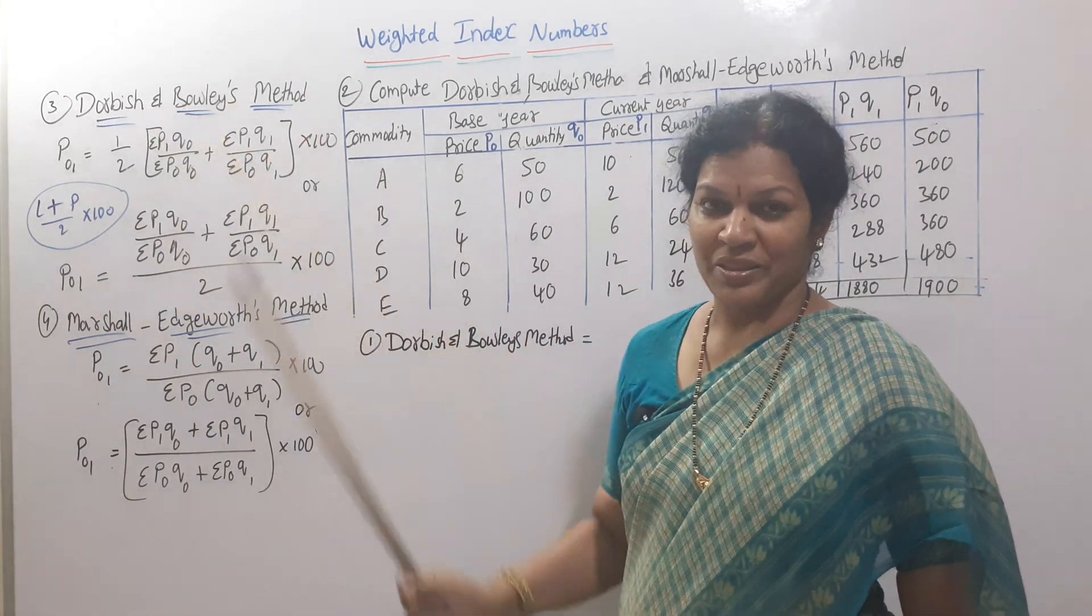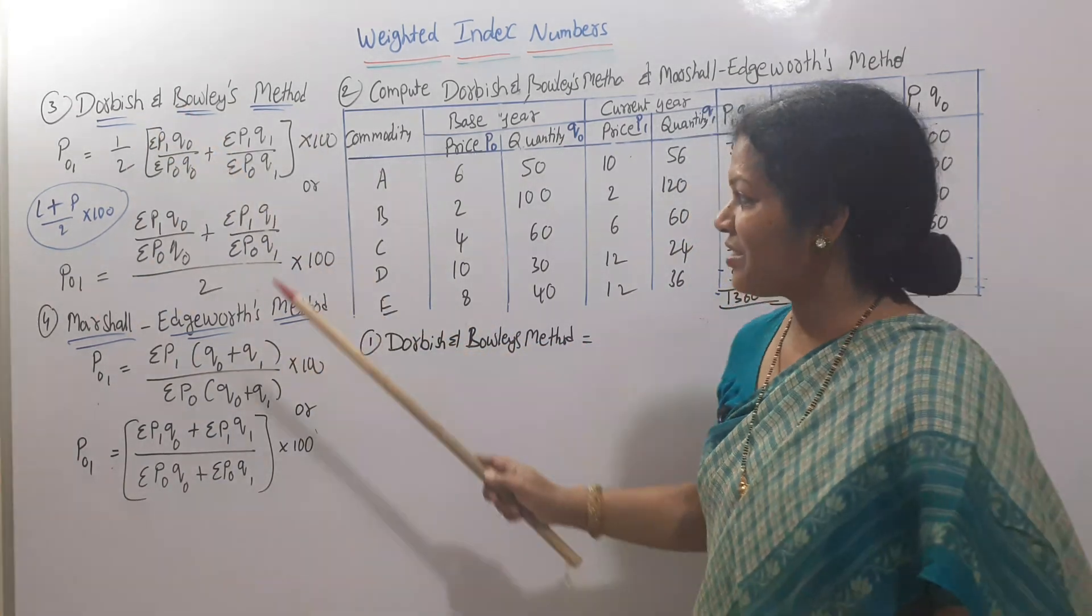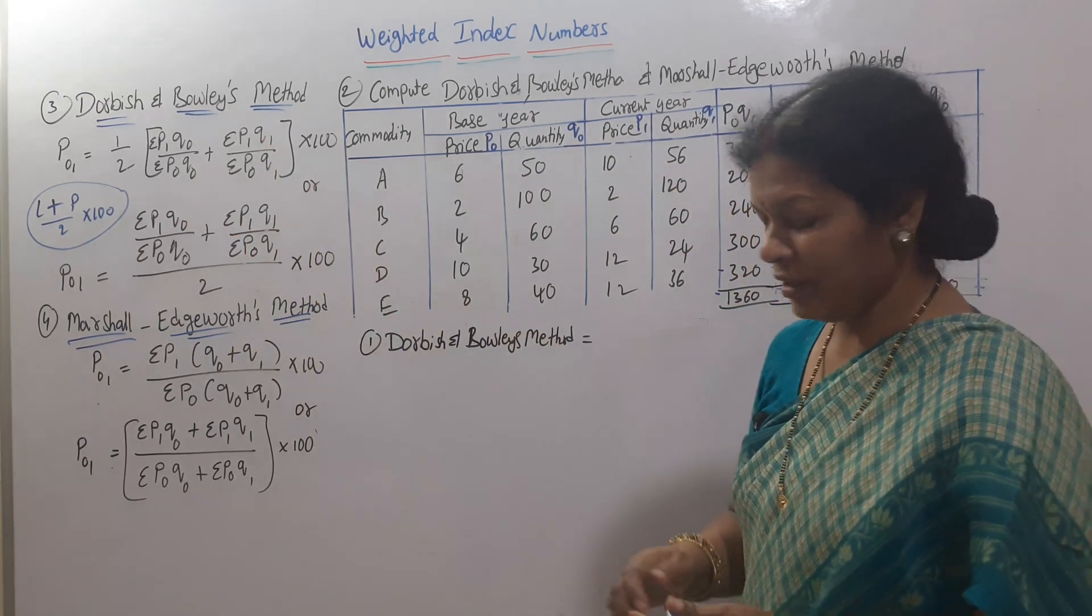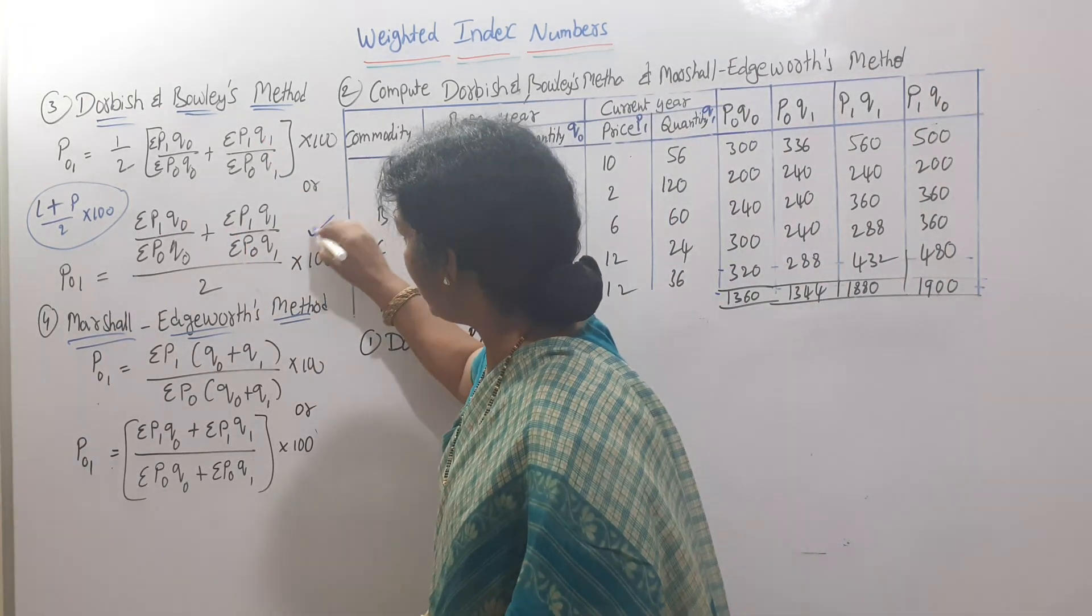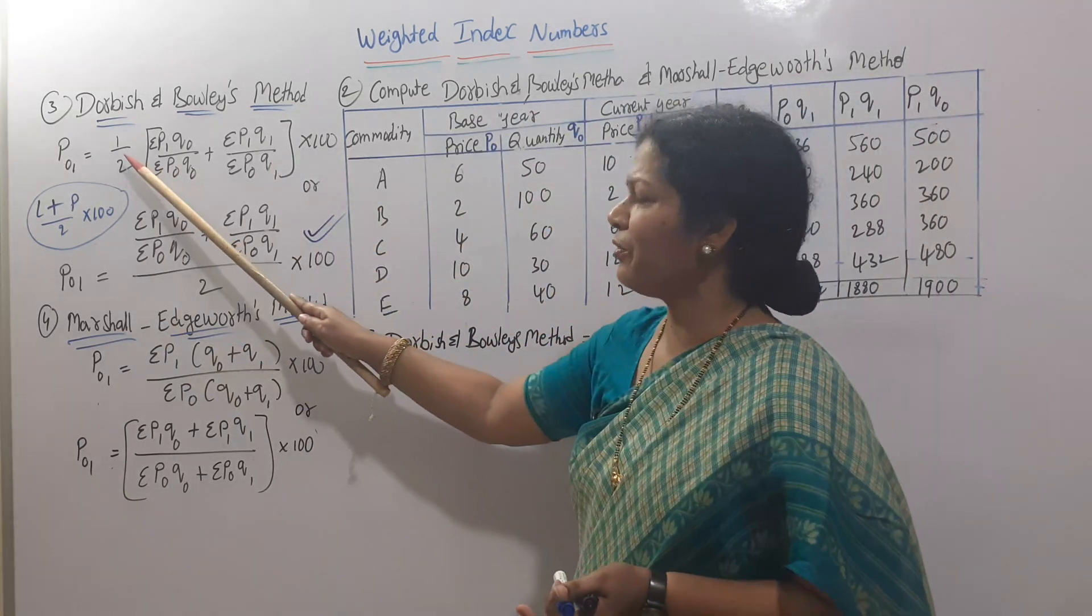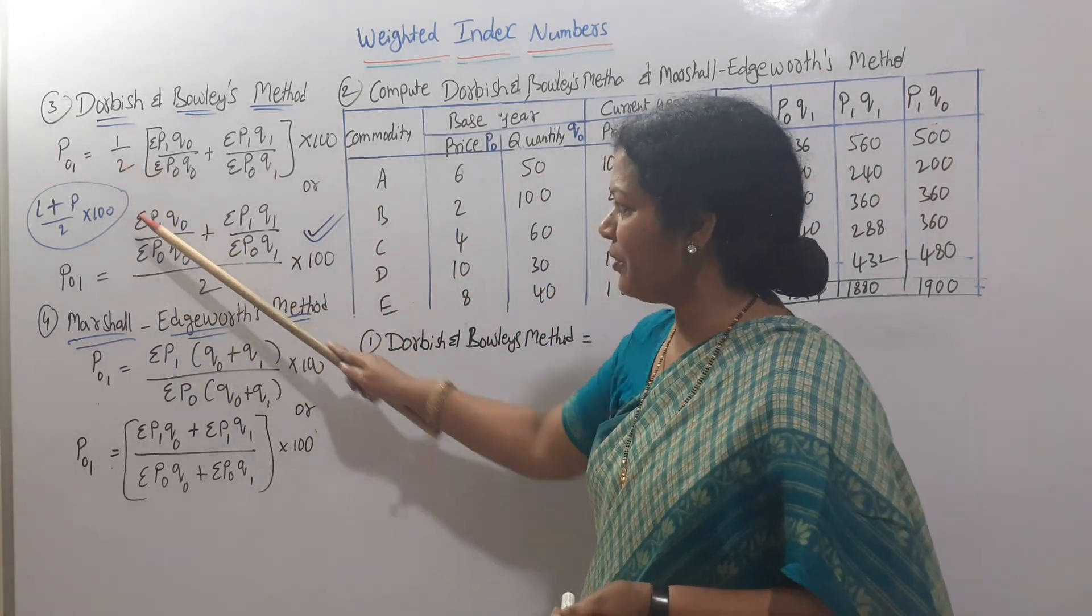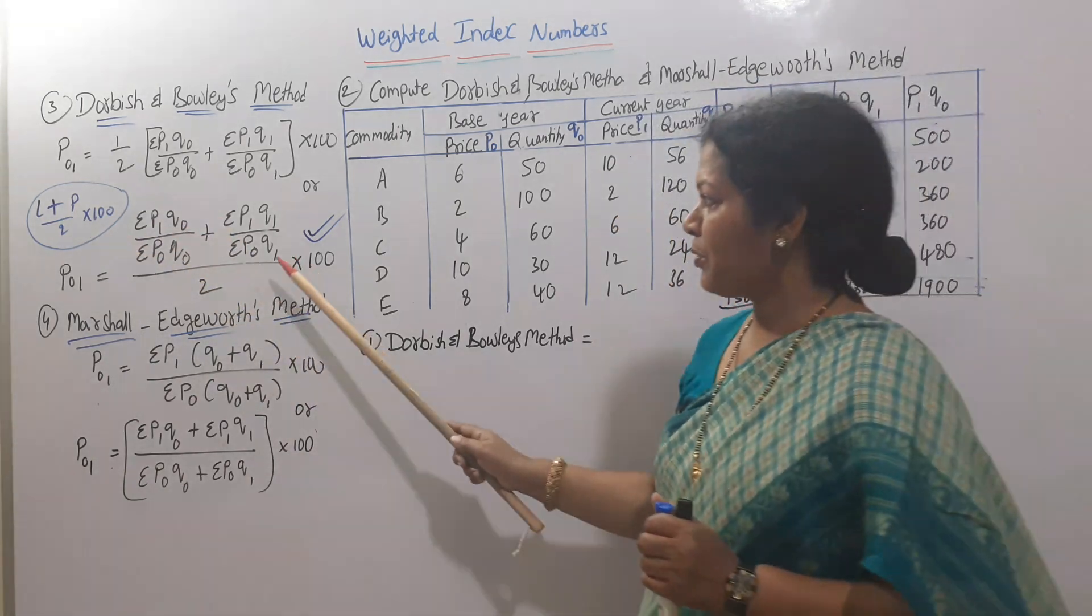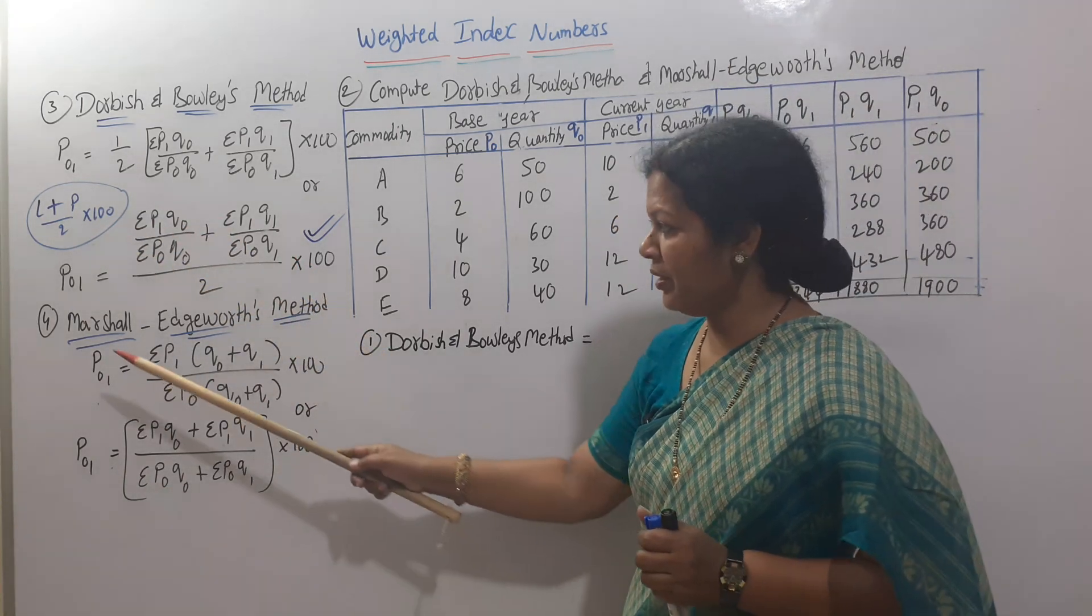In short, you can remember it as L plus P by 2 into 100. We can follow either formula; I prefer this method. Remember this formula - half is taken to the denominator of Laspeyres and Paasche.